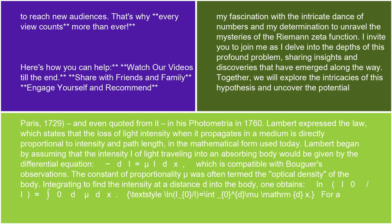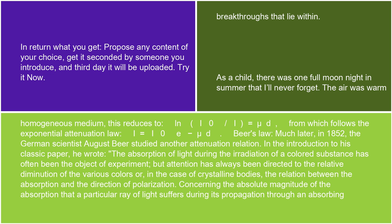Integrating to find the intensity at a distance d into the body, one obtains ln(I₀/I) = ∫₀ᵈ μ dx = μd, from which follows the exponential attenuation law: I = I₀ e^(−μd).